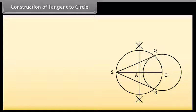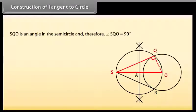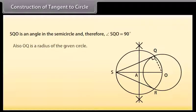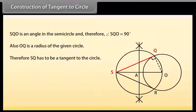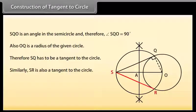Let us now check how this construction provides us the required tangents. Join OQ. We can see that angle SQO is an angle in the semicircle, and therefore angle SQO is equal to 90 degrees. Also, OQ is a radius of the given circle. Therefore, SQ has to be a tangent to the circle. Similarly, we can say that SR is also a tangent to the circle.